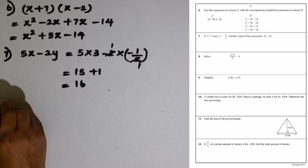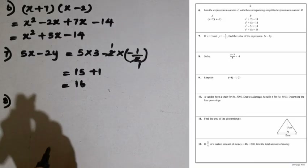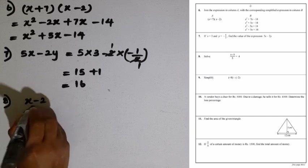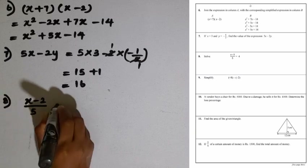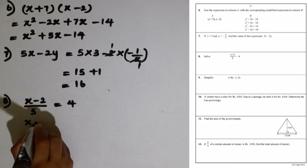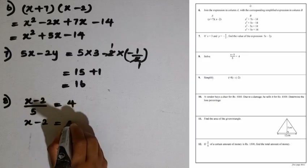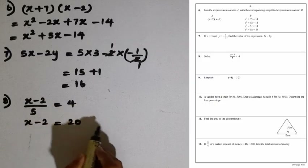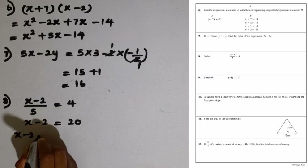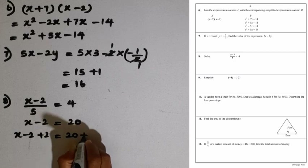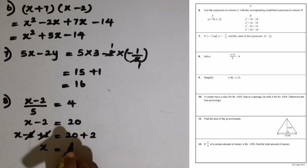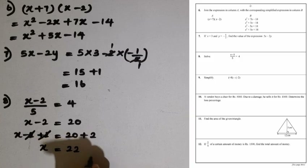Question number 8: solve the equation (x minus 2) over 5 equals 4. First, we multiply both sides by 5, giving x minus 2 equals 20. Now we add plus 2 to both sides: x minus 2 plus 2 equals 20 plus 2. The minus 2 and plus 2 cancel, leaving x equals 22.